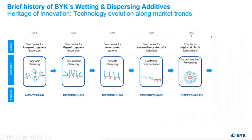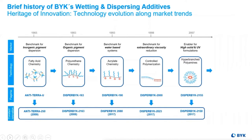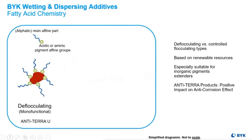Fatty acid chemistry is the benchmark for inorganic pigment dispersions. It is our oldest chemistry of wetting and dispersing additives, but that doesn't mean it is out of the game. On the contrary, new additives based on fatty acid continue to have their place in the technology of pigment dispersions. These additives are very unique but simple designs that hold their own and more.